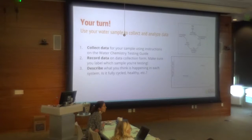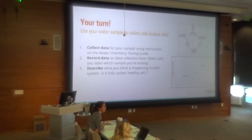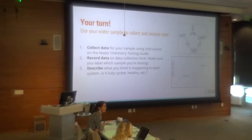Nitrite — you both said zero, which is good. You both said hardness is 150, chlorine is zero, alkalinity is 40. One group said pH is 7.2 and one group said pH is 7.8 — so again, some user bias. Ammonia was zero. Any thoughts, group with tank one, about what's happening in your tank?